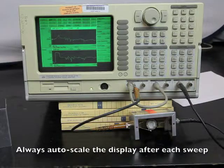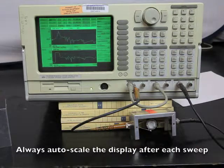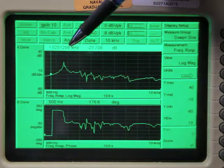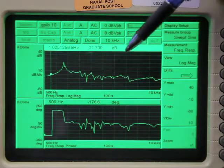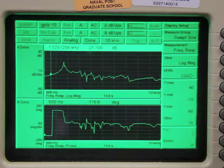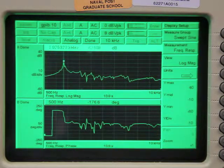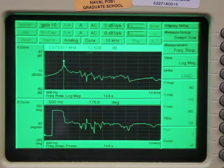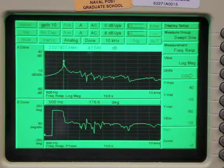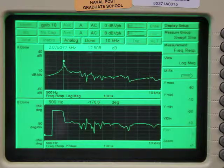You should always get into the habit of doing an auto scale for each channel after you take a new measurement. What we see are a number of resonant peaks and notches that are known as anti-resonances. The most important thing is that first large resonant peak, which is right at 2.075 kilohertz with a magnitude of 12.51 dB.